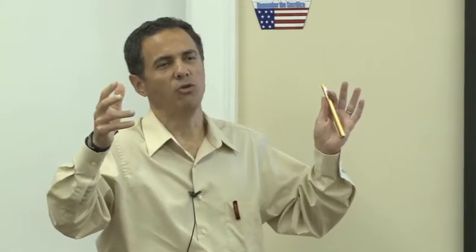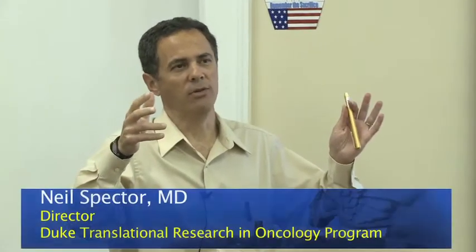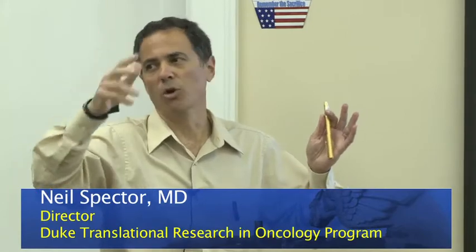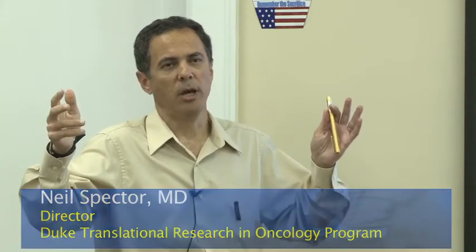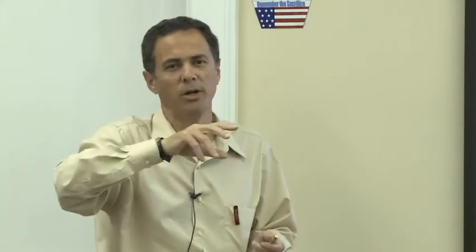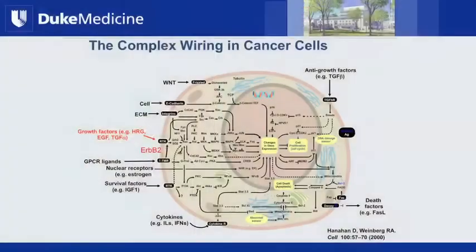To me, a breast cancer tumor cell is like this room. You've got multiple lights, you've got multiple light switches, and you've got the wiring inside the wall. You can see the switches on the wall, but you can't see the wiring. All of this in here is the wiring inside the wall — you can't see that when you look at a tumor cell under a microscope.